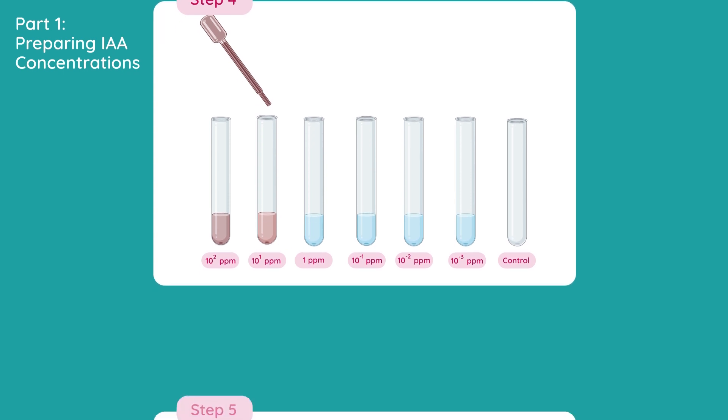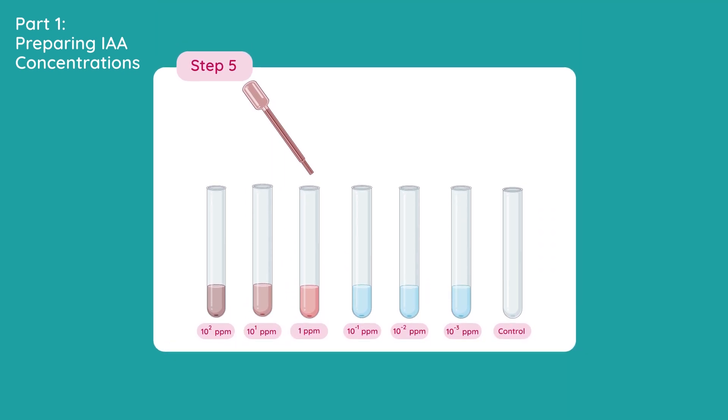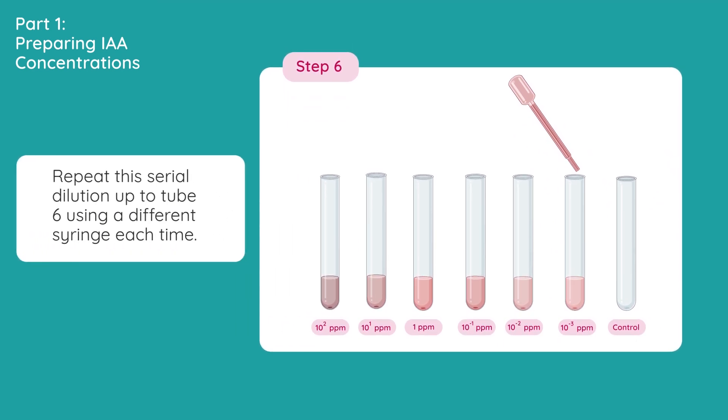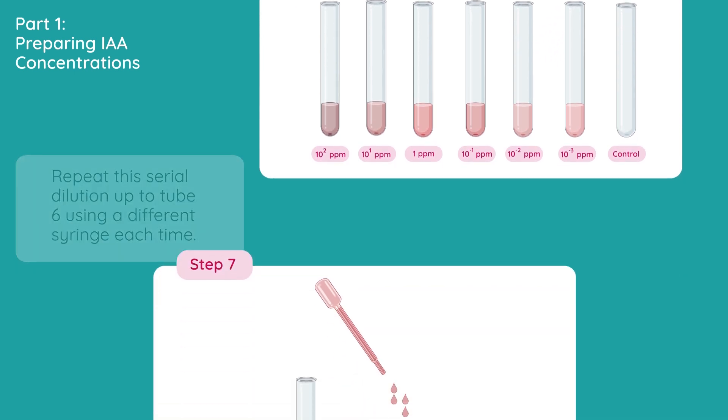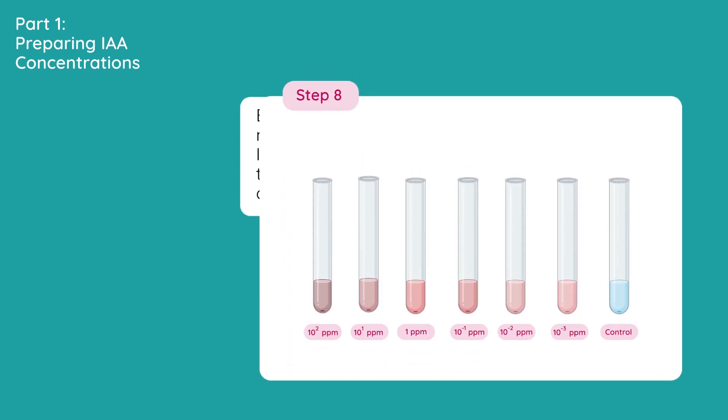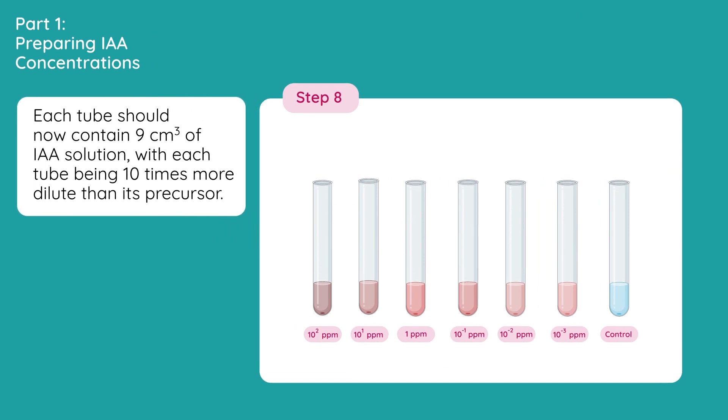Using a different syringe, take 1 centimeter cubed from tube 2, 10 to the 1 ppm, and add to tube 3, labeled 1 ppm. Repeat this serial dilution up as far as tube 6, using a different syringe each time. Take 1 centimeter cubed from tube 6, labeled 10 to the minus 3 ppm, and dispose of the 1 centimeter cubed down the sink. Each tube should now contain 9 centimeters cubed of IAA solution, with each tube being 10 times more dilute than its precursor.